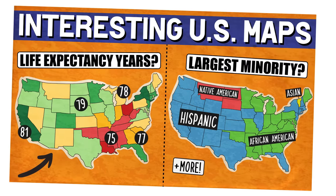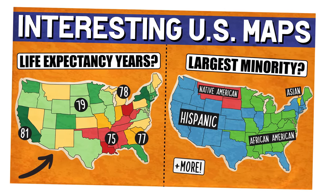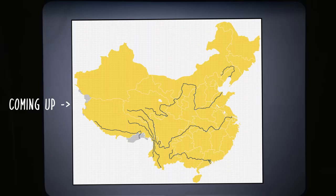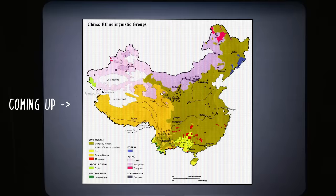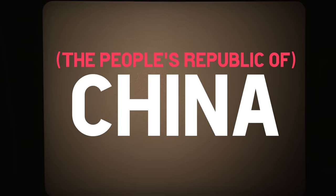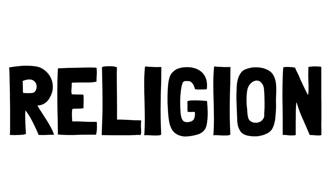I recently did a video about US maps that you seem to really like, so I thought this could be interesting to do for other countries using data maps that allow us to learn about them. So in this video, China — the People's Republic of China. Starting with the ones on the thumbnail. First, religion.